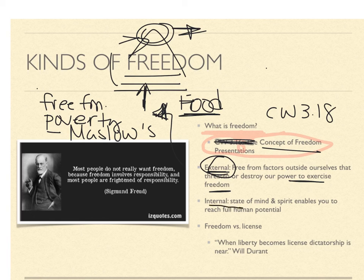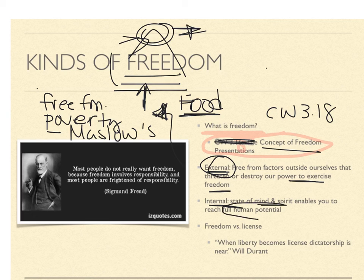There are also internal factors — states of mind and spirit that either enable you to reach your full potential or inhibit you from reaching it. For example, if you're addicted to drugs, that's an internal thing that would affect your ability to reach your full potential as a human. In the eyes of the Christian, freedom is ultimately the human person being fully alive. So there are things that would inhibit that, not just externally but also internally.